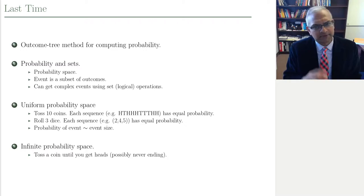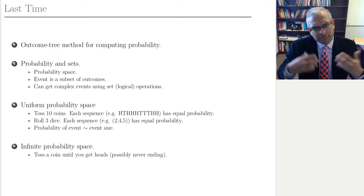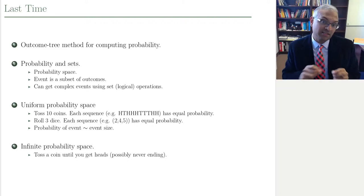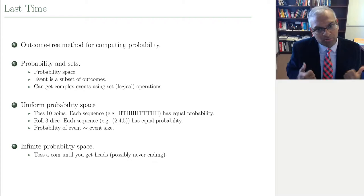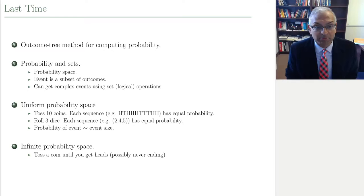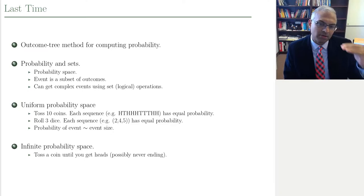Last time we talked about computing probabilities. The idea is you're doing an experiment with an uncertain outcome — there's a set of possible outcomes and you just don't know which one is going to occur. The first thing you do is set up what's called the probability space: tell me the set of possible outcomes and associate to each possible outcome a probability. One of the most popular methods for getting this probability space, especially when working with a real-world experiment, is the outcome tree method.